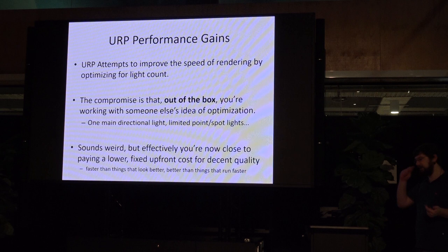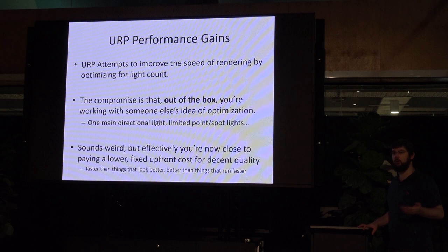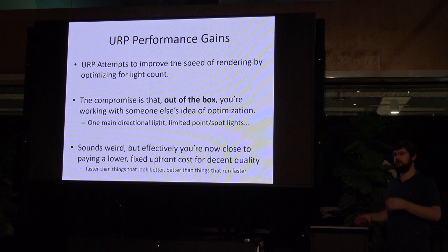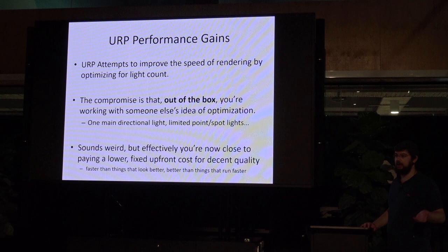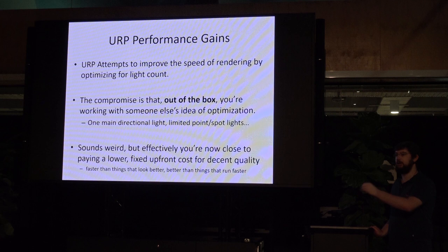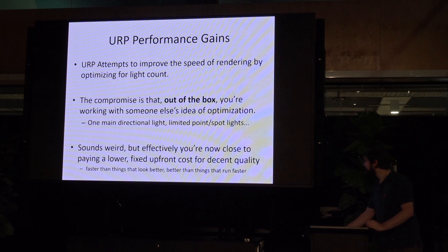To get the most performance out of the Universal Render Pipeline, it's about working with the optimizations. They've optimized it for typically one sunlight and between two, four, maybe seven point lights and spotlights. The way this works is it tries to compile everything to a single pass rather than rendering again and again for each light — you pay one upfront fixed cost. If you're only using one spotlight and two point lights, go into the URP Render Asset, change those limits, and it runs faster. That's how you get your performance gains: lower the fixed cost and stay within it.